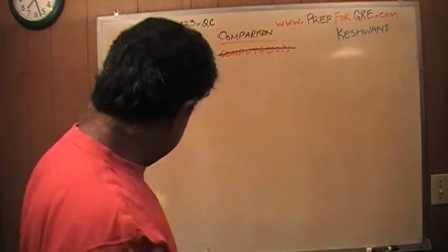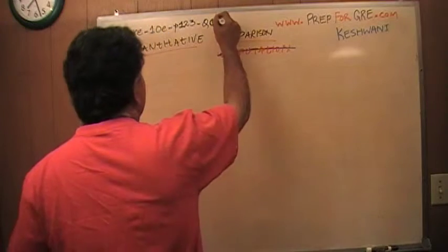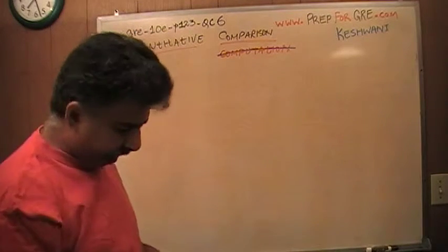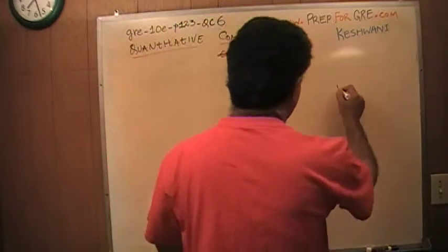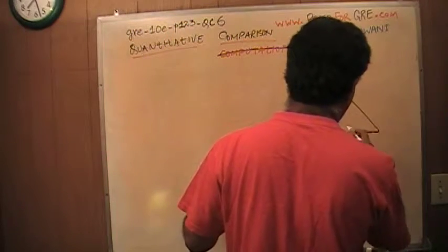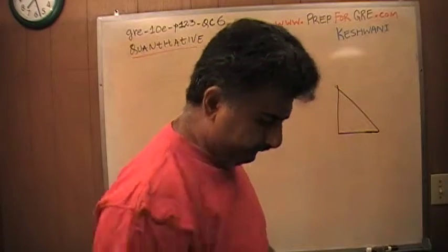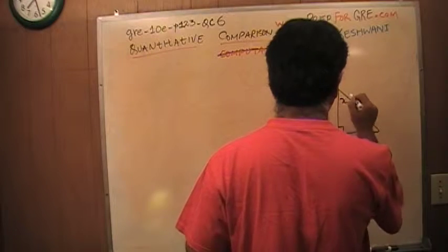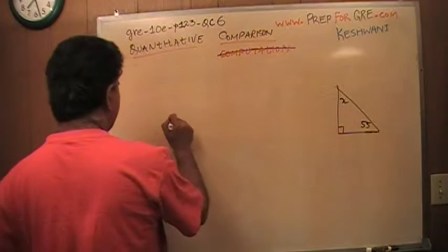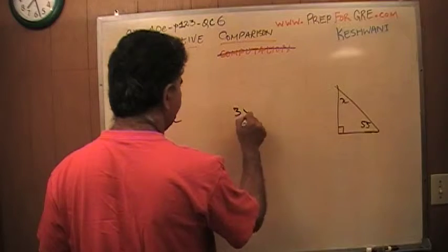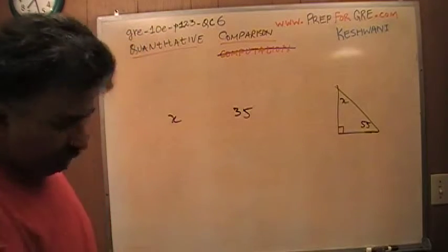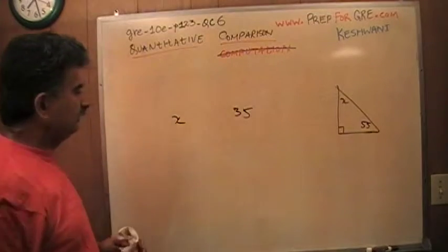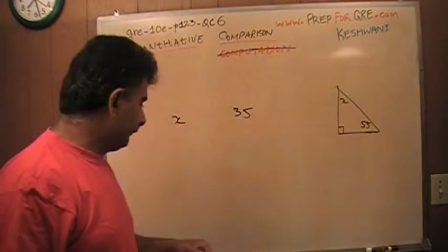Number six. Let's see what number six says. In number six, we are given a picture. This is 55 degrees here. This is x. And the question is which one is bigger, x or 35? That is my x. I know you may not like it. So what do I do here?